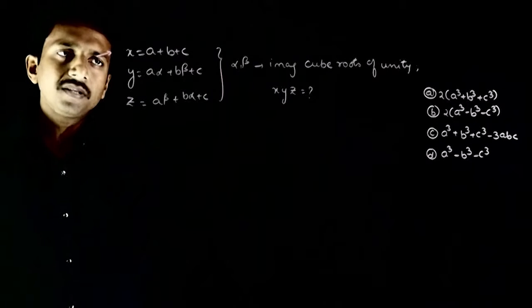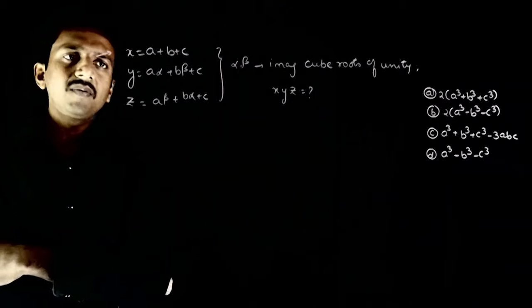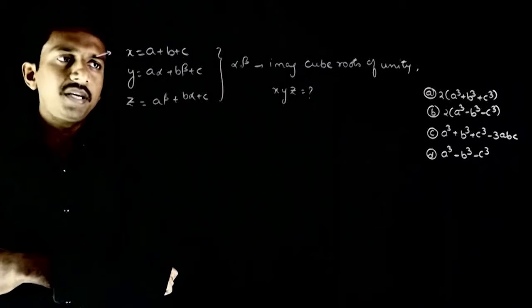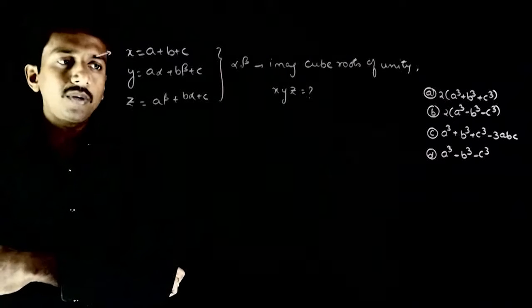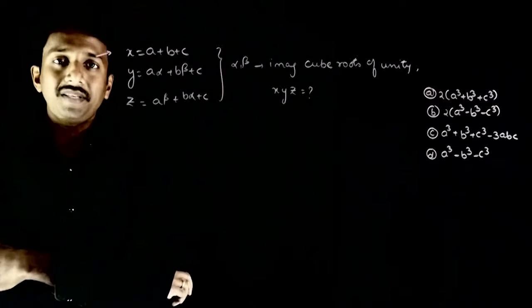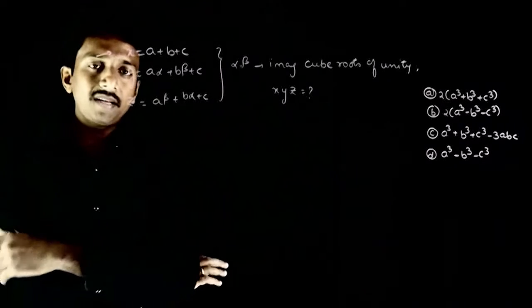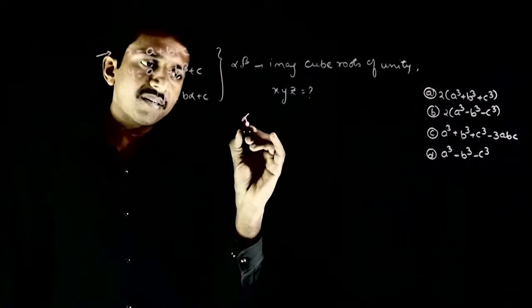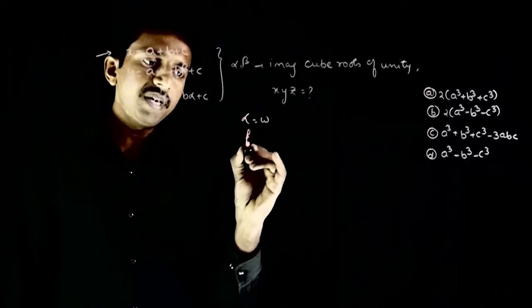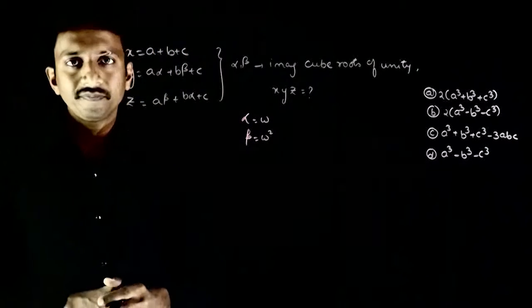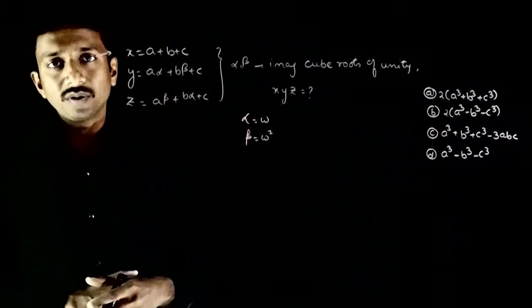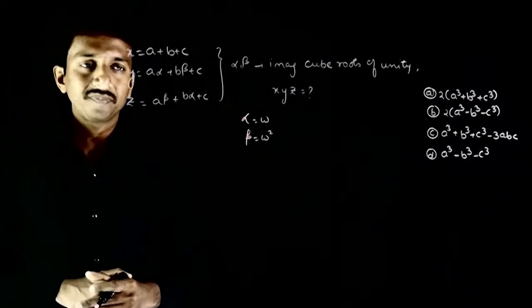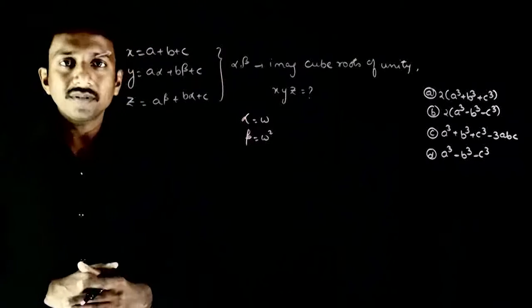Welcome students. This question mein diya hai: x is equal to a plus b plus c, y is equal to a·alpha plus b·beta plus c, and z is equal to a·beta plus b·alpha plus c, where alpha and beta are the complex cube roots of unity — that is, alpha is equal to omega and beta is omega square. So x into y into z is equal to how much? You have four options — which of these are right?